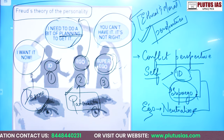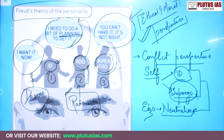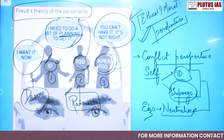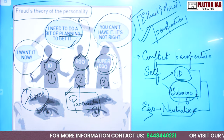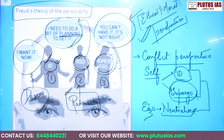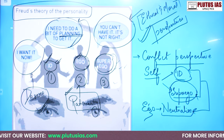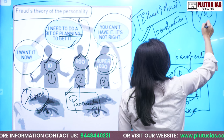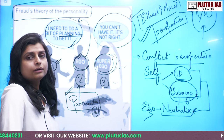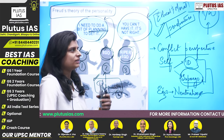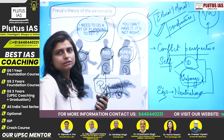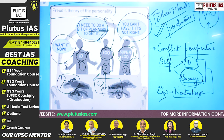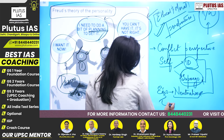Freud's theory of personality says that first there shall be a desire, and this desire is connected with ID. Then second is your ego, which shall talk about rationality. And third is your super ego, talking about the moral and ethical aspects. This moral and ethical aspect will always deal with what is right and what is wrong. There are situations where we land up in a dilemma about what is right. That is a situation where conflict arises between ID and super ego, and to resolve that, ego tries to neutralize or balance them out.